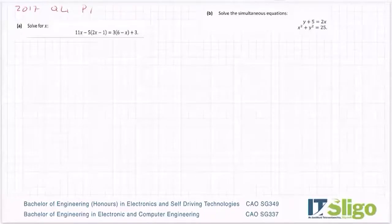Alright, let's have a look at some algebra questions. So the 2017 one, we're going to specifically focus on questions here that have simultaneous equations in them. So 2017 was one of them, question four. Part A though was solve for x.